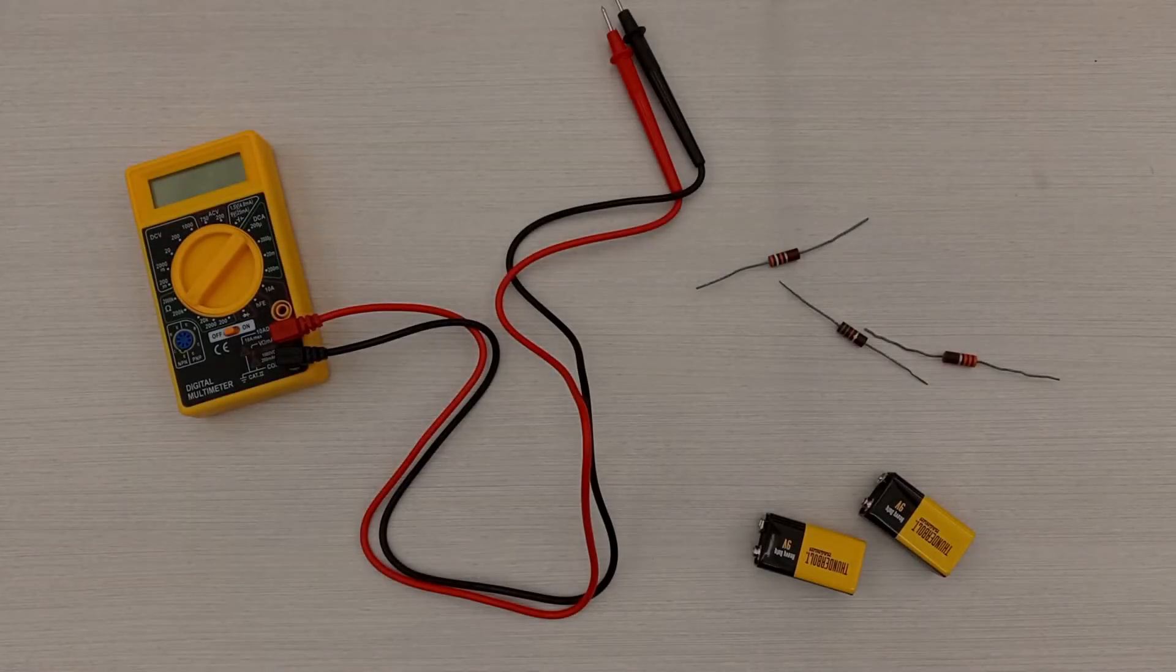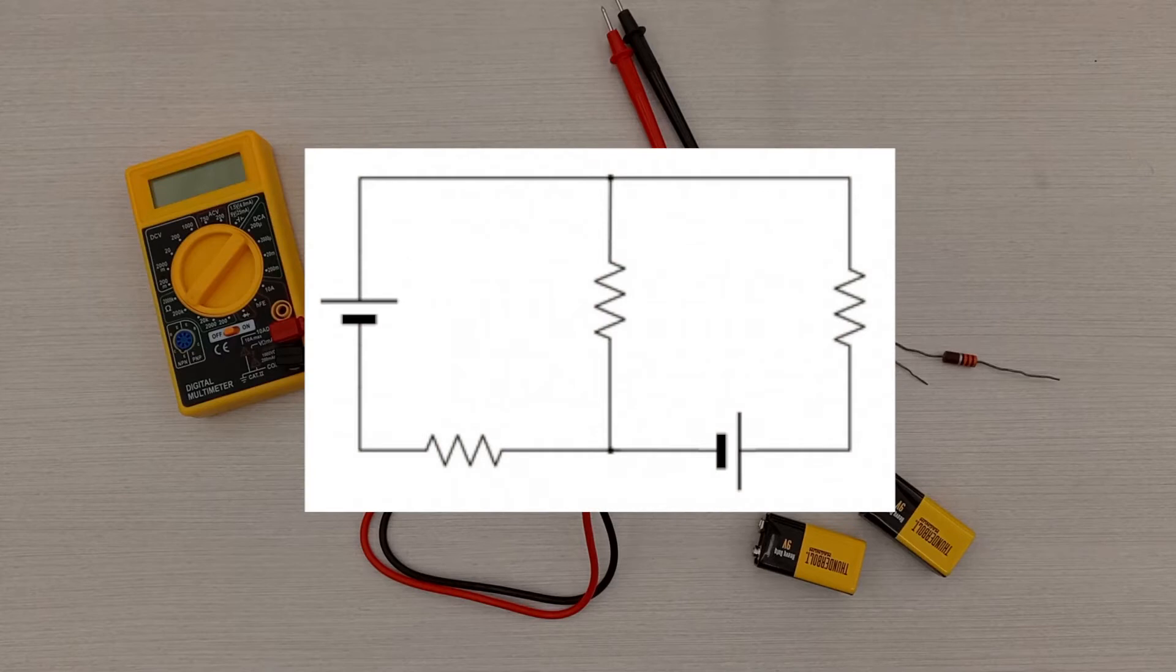In this experiment, you'll use two batteries and three resistors to create a simple circuit. Using your knowledge of Kirchhoff's laws, you'll predict the voltages across each resistor and the current through each resistor, then test those values using the multimeter.